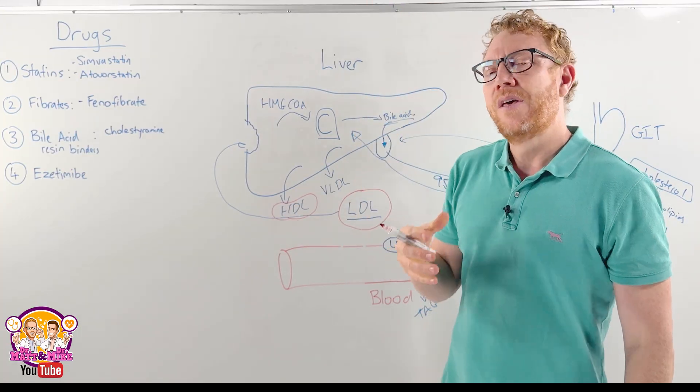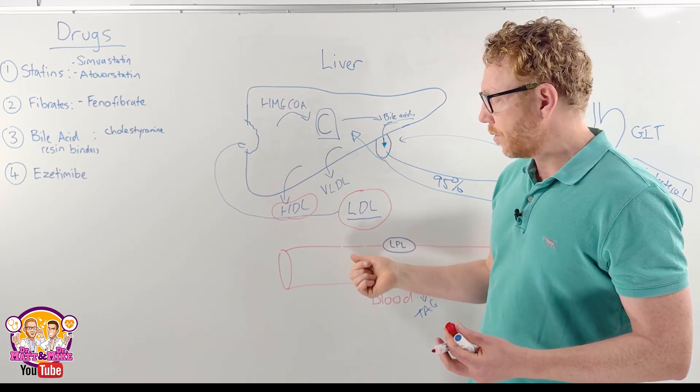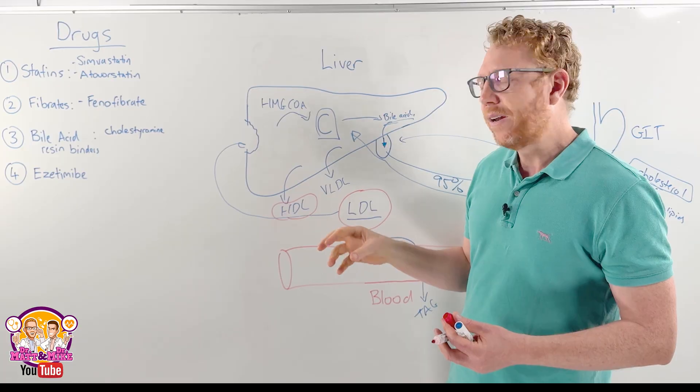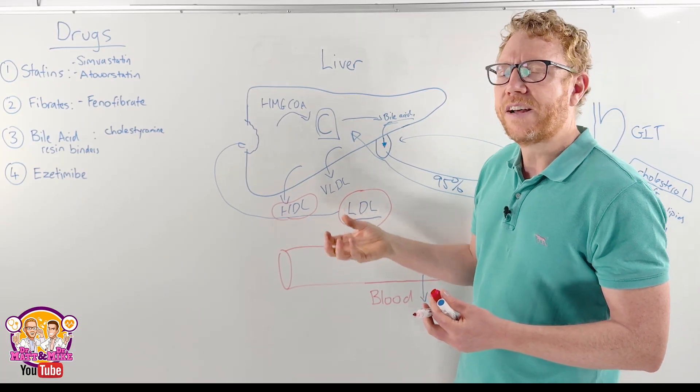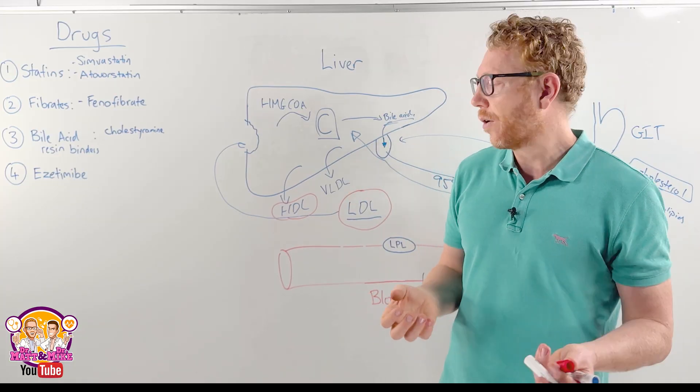So when we have too much LDLs and low amounts of HDLs, so they're switched, one's gone down, one's gone up, this is termed dyslipidemia, and it increases the risk of LDLs going inside blood vessels, oxidizing, forming foam cells and fatty plaques, fatty streaks, and then increasing the risk of heart attack and stroke.